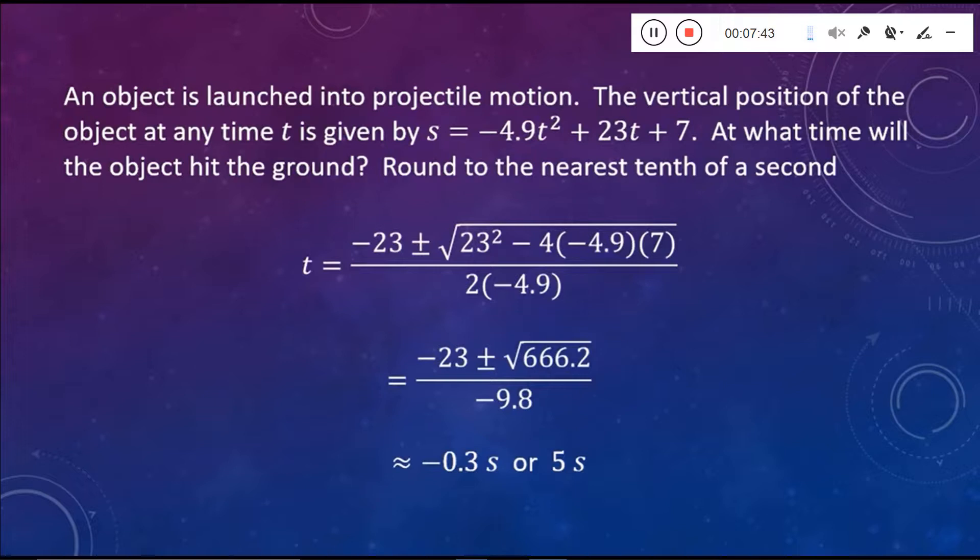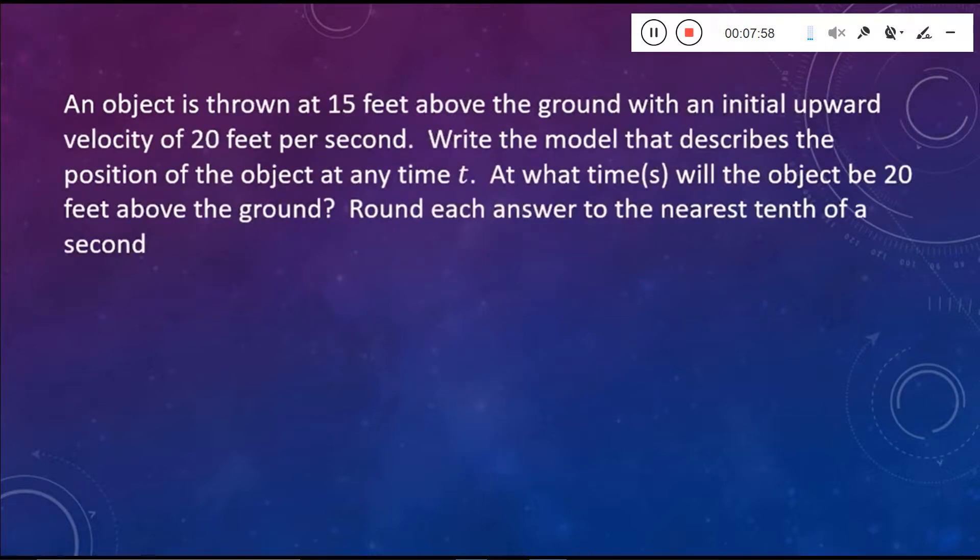But just once more, the only way that this formula goes off is if you use the incorrect values for a, b, and c. Again, you have to take the number as well as the sign in front of each of those things. And those are your a, b, and c values.